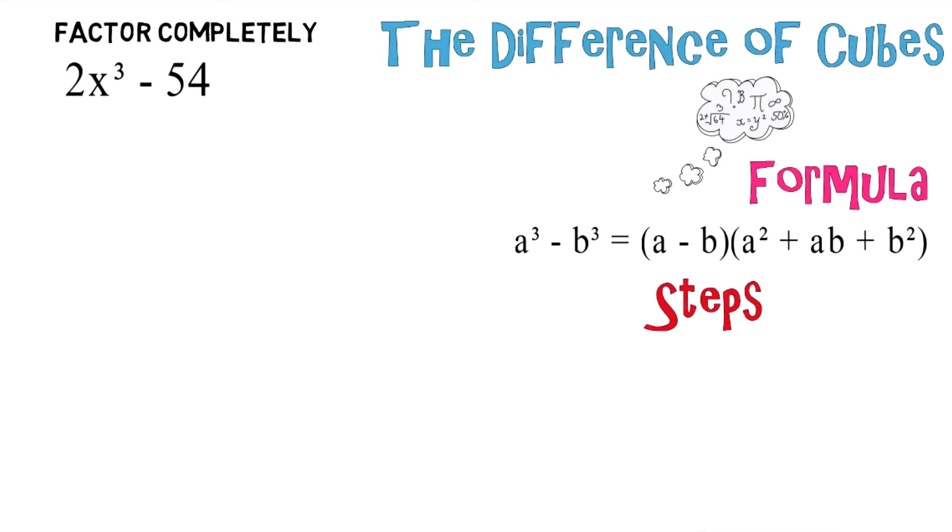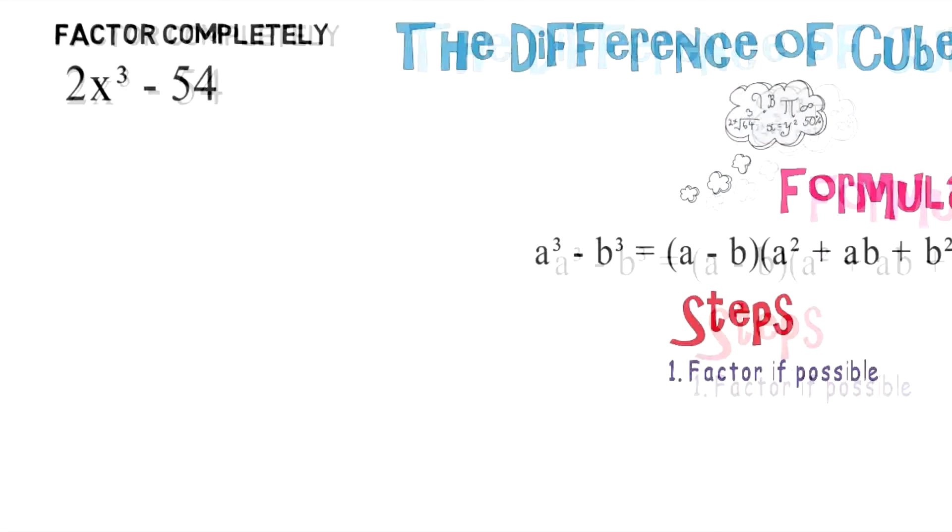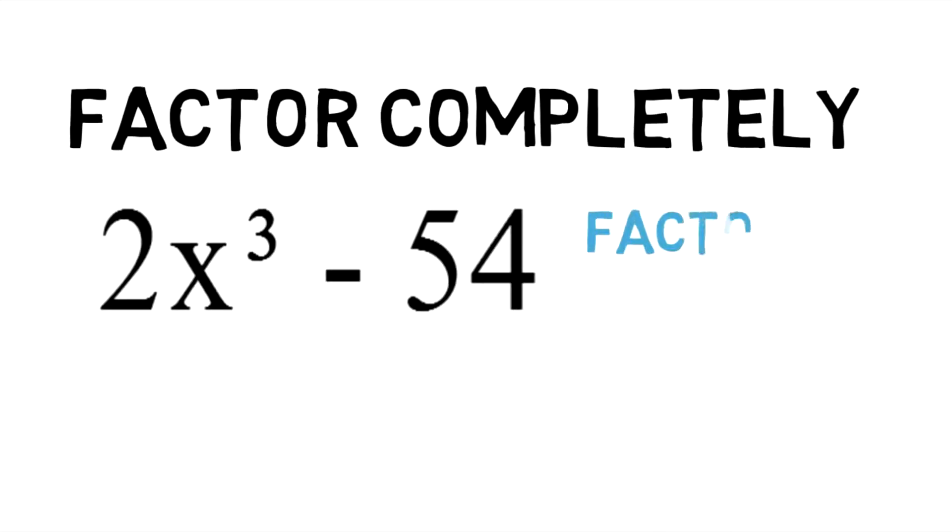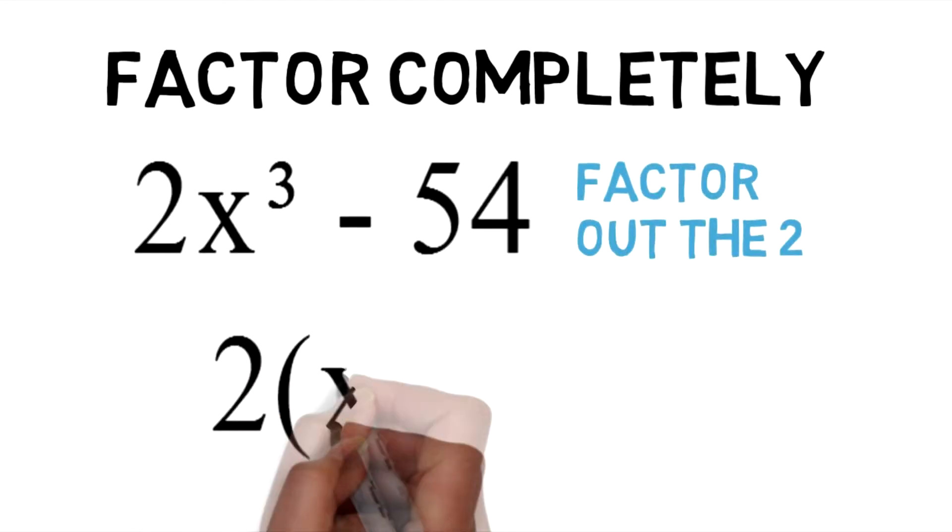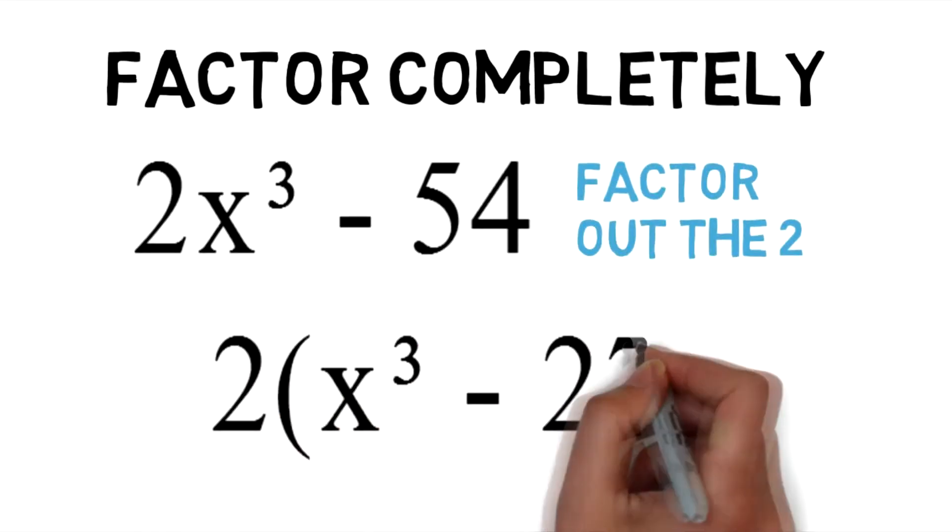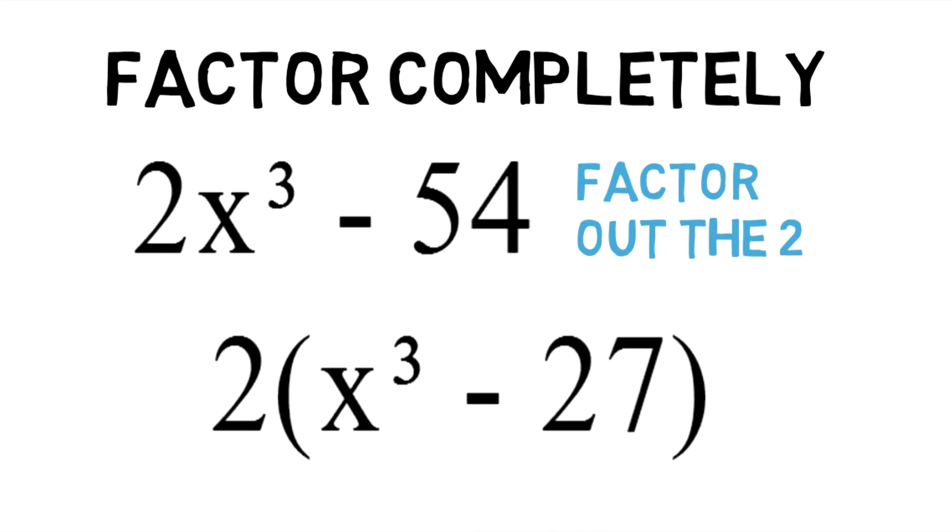Given the formula, we're going to follow a couple steps. First step is if it's possible to factor. Let's take a look here. If you take a look, you could factor out the 2, so we're going to pull out a 2 which gives us 2 times x to the third power minus 27.